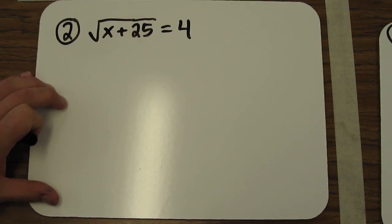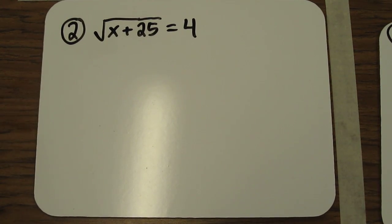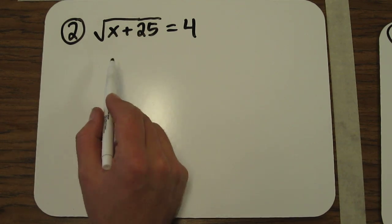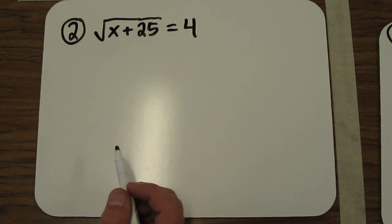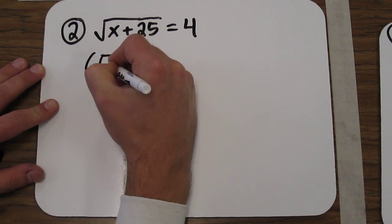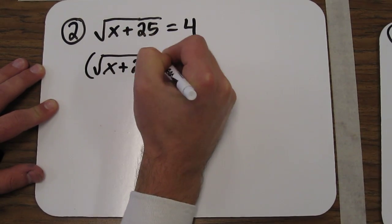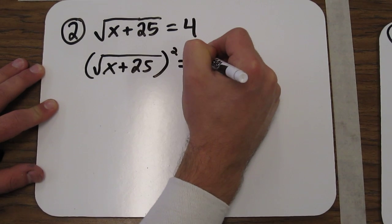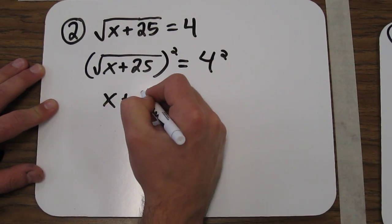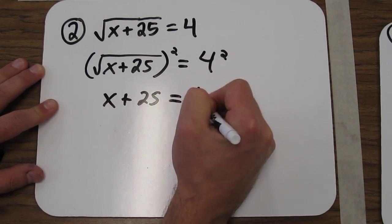Let's try another one. On this one, the radical is already isolated. We have the square root of x plus 25 equals 4. By squaring both sides, we're left with x plus 25 equals 16.